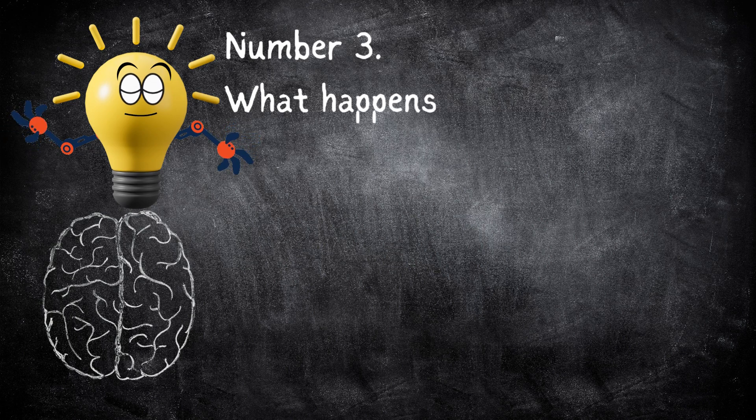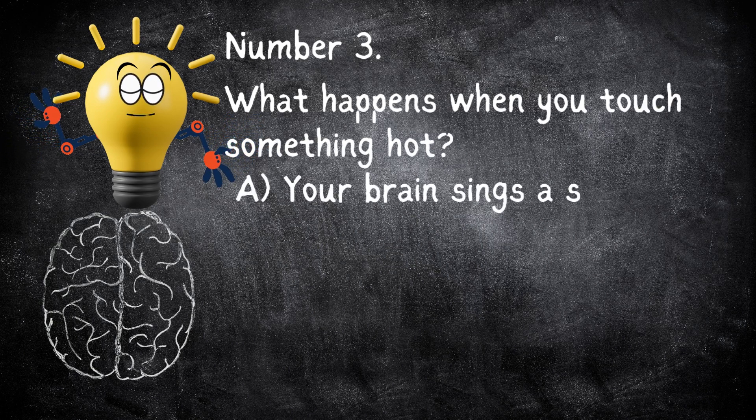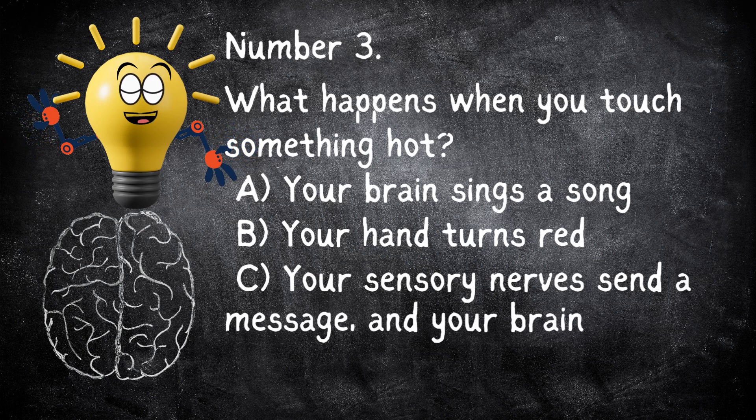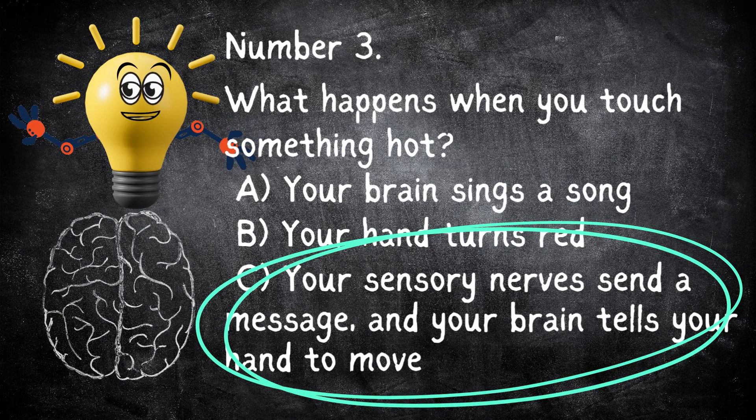Number three, what happens when you touch something hot? A: your brain sings a song. B: your hand turns red. C: your sensory nerves send a message, and your brain tells your hand to move. If you answered C, you are correct.